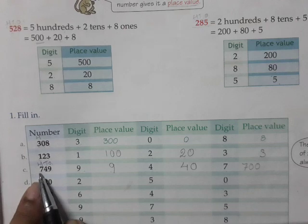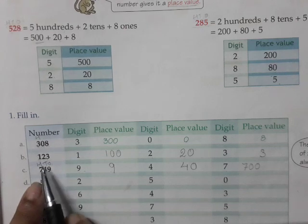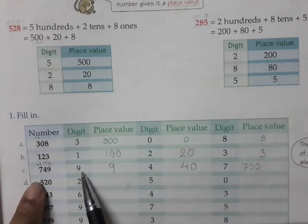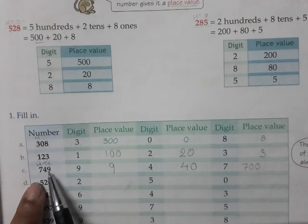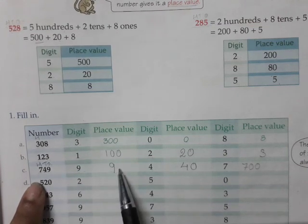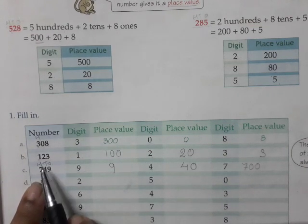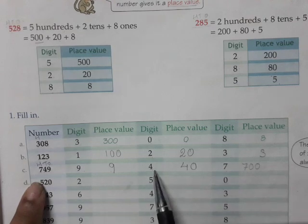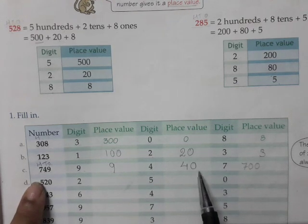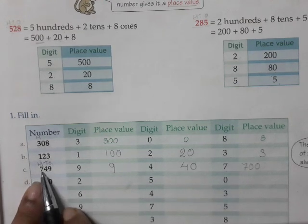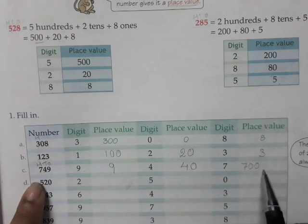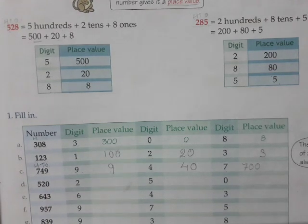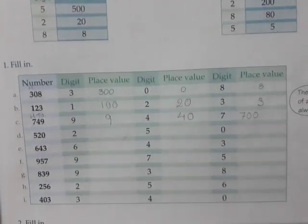For 749: 7 is in the 100's place, 4 is in the 10's place, 9 is in the 1's place. The place value of 9 is 9, the place value of 4 is 40, and the place value of 7 is 700. You are going to do this exercise in your junior math book.